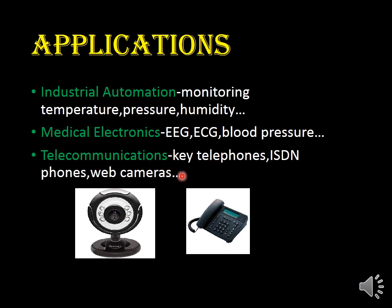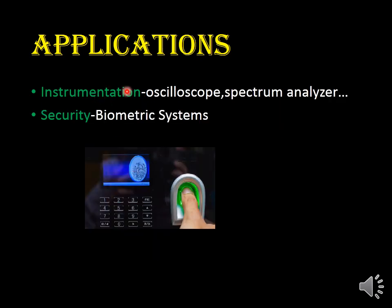Also, in telecommunications: key telephones, ISDN telephones, web cameras — these are applications of embedded systems. Other applications include instrumentation — in labs, we use oscilloscopes and spectrum analyzers, which are also embedded systems. Then, security: biometric systems. Nowadays, we use biometric systems in many places for security purposes. These all come under the applications of embedded systems.